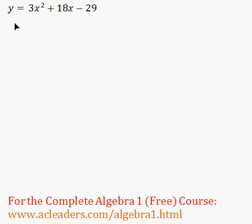Alright, here we have y equals 3x squared plus 18x minus 29. And let's get started to complete the square.